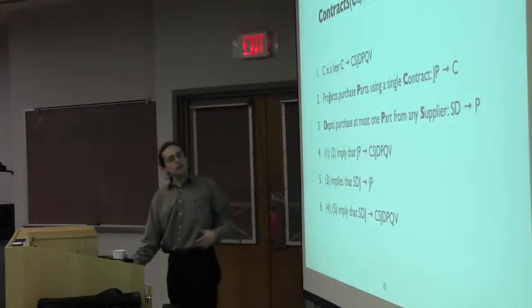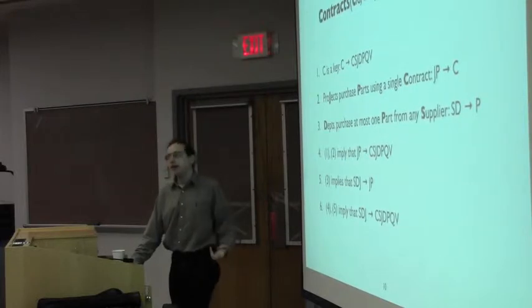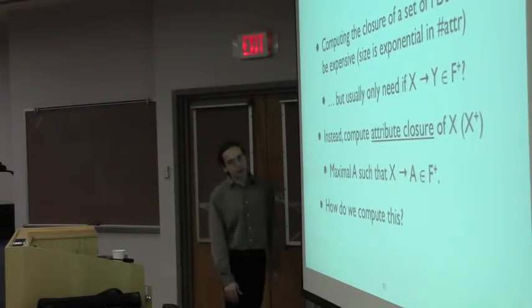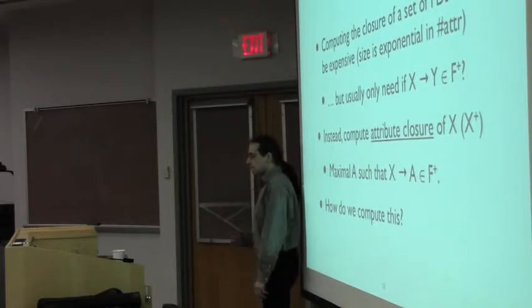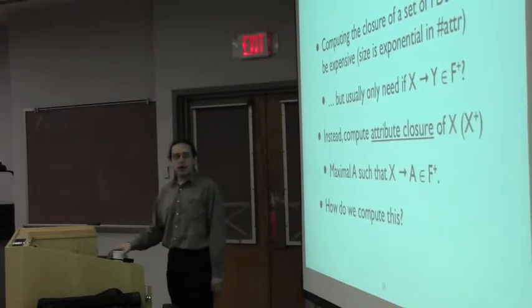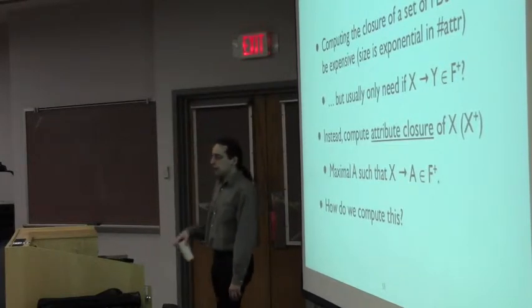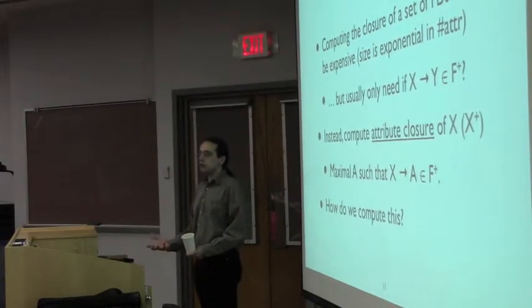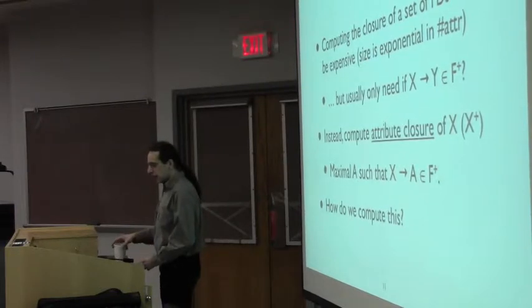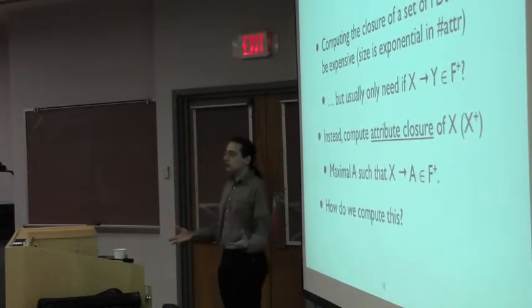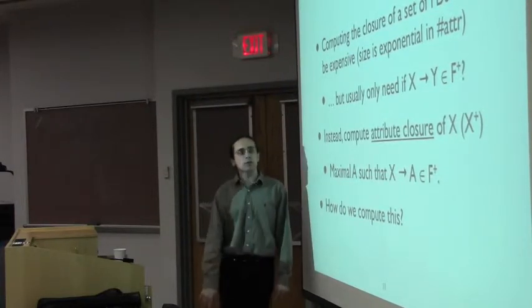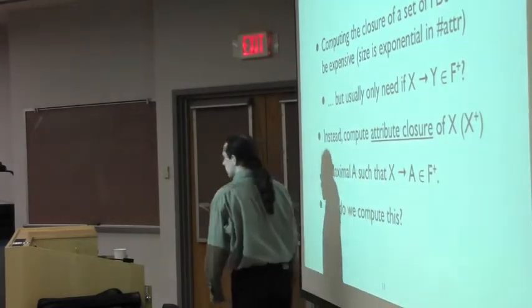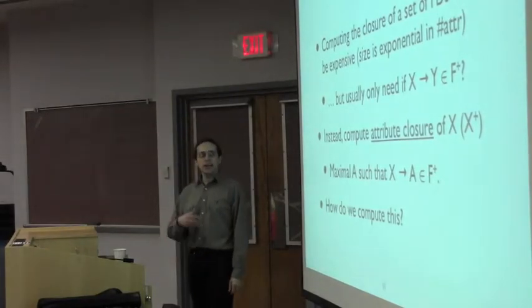We can combine the first two rules: since JP → C and C → the rest of the relation, by transitivity we get JP → entire relation. Then by augmentation with SD → P → entire relation, we can infer a functional dependency from SDJ to the entire relation. That lets us know that SDJ is at least a super key. This kind of reasoning helps us very quickly identify when there's some sort of redundancy in the data we're storing.